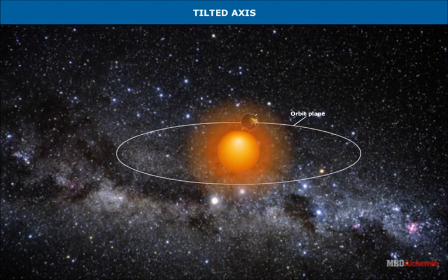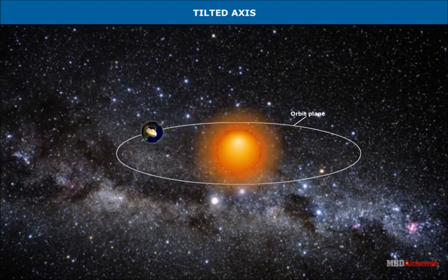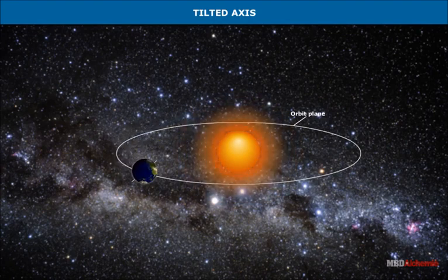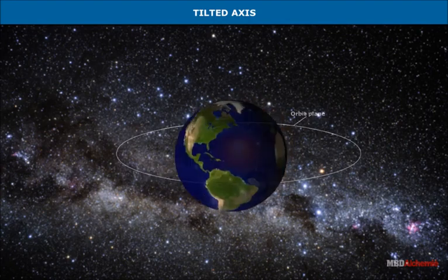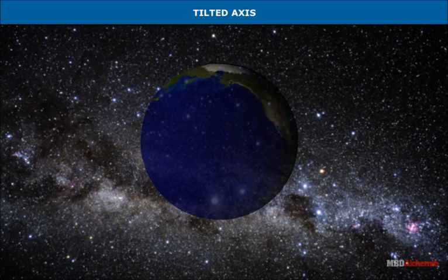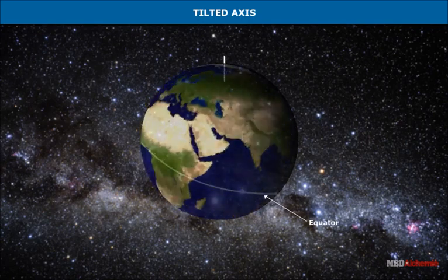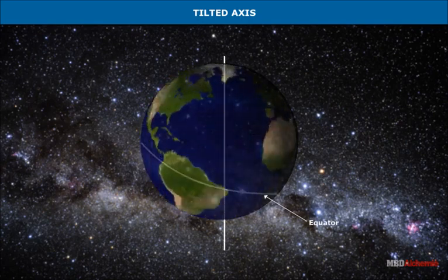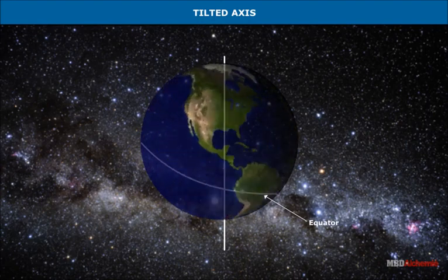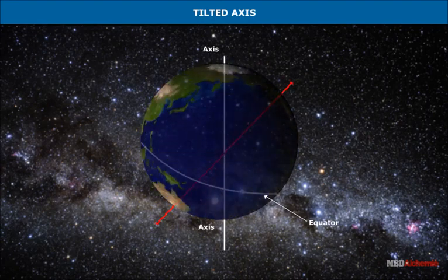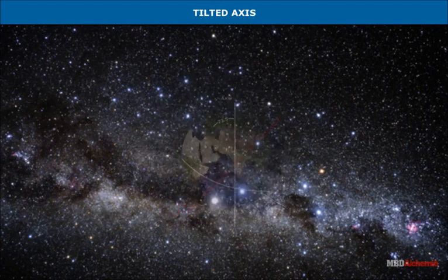In other words, it makes an angle of 66 and a half degrees with the orbital plane. The globe is shown to rotate on a line passing through its center, known as its axis. A line around which a heavenly body is thought to rotate is known as its axis. The globe also shows how this axis passes through the north pole and the south pole.